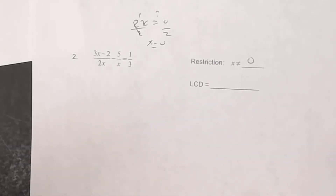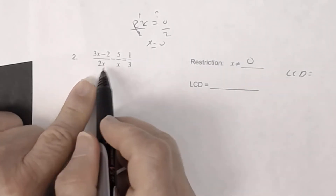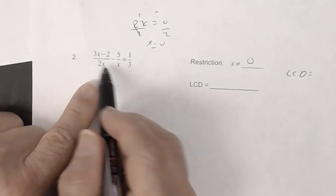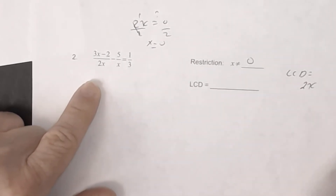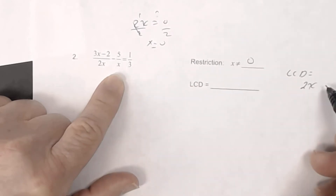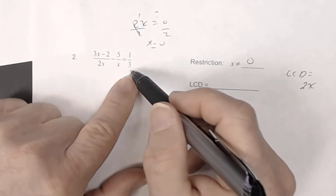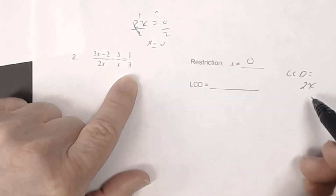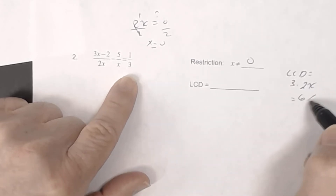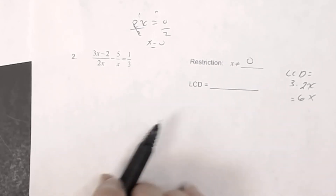Now find the LCD for denominators 2x, x, and 3. To get each denominator to reduce to one, the LCD must contain 2x and a factor of 3. So the LCD is 6x. Check: 2x goes into 6x, x goes into 6x, and 3 goes into 6x. That works.